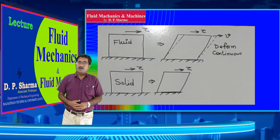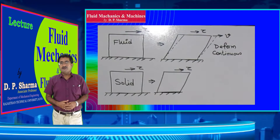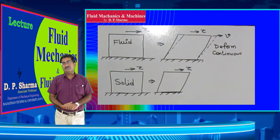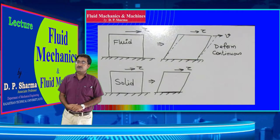A fluid is a substance which deforms continuously when subjected to shear force. The tendency of continuous deformation of a substance is called fluidity. And a solid is a substance which deforms not continuously when subjected to shear force, or has the tendency to resist deformation.